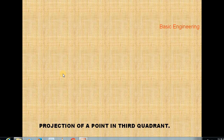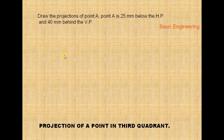Hi friends, welcome to my channel Basic Engineering. Today we will discuss the projection of a point in the third quadrant. Draw the projection of point A — the point is 35 mm below the HP and 40 mm behind the VP.